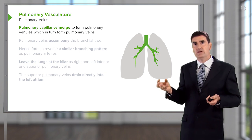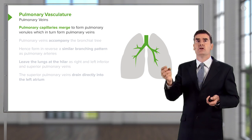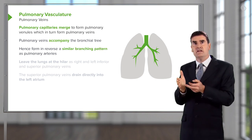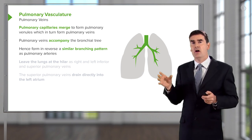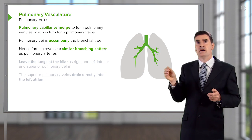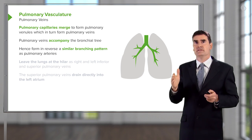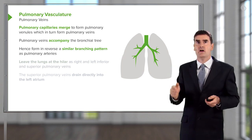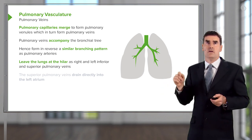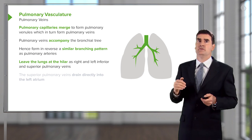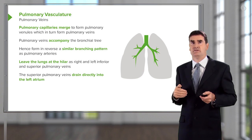Those pulmonary capillaries then drain into pulmonary venules, which then drain into pulmonary veins. The pulmonary venous circulation does the reverse of the pulmonary artery circulation — branches forming together, forming bigger and bigger blood vessels in exactly the same pattern as the pulmonary arteries but in reverse — eventually ending up in two veins leaving each lung: the right and left inferior and superior pulmonary veins.